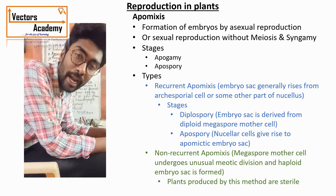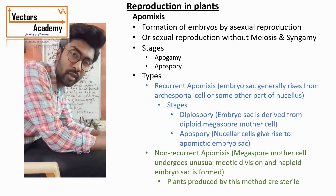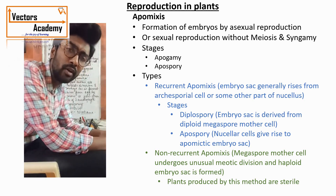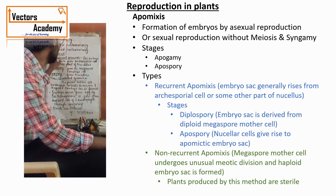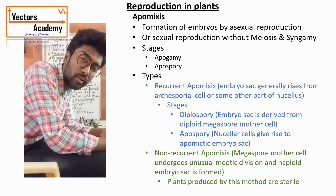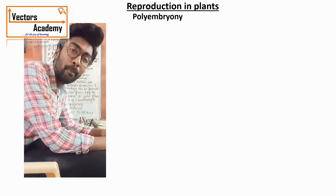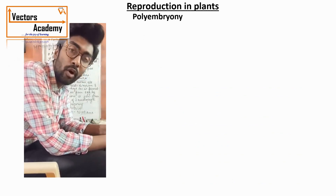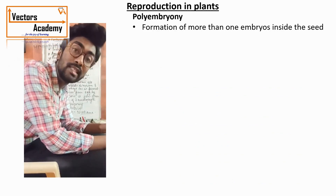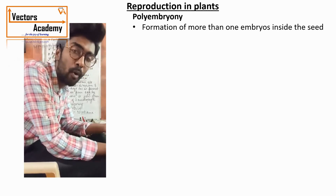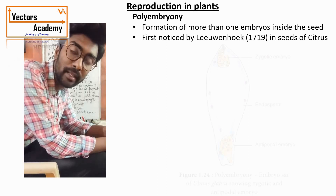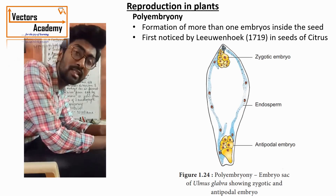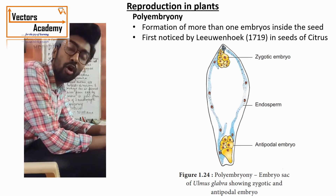Apomixis is a part of asexual reproduction — formation of a new individual without fertilization. The last topic is polyembryony. 'Poly' means many and 'embryony' means embryo, so polyembryony is the formation of more than one embryo in a seed. It was first studied by the scientist Leeuwenhoek in the citrus fruit.